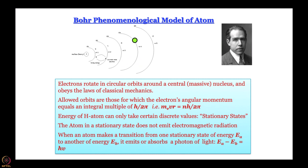These were given a name by Bohr - they were called stationary states - and it is important to understand this term because it is used even now in the most modern approach of quantum mechanics. When we say stationary states we do not mean that the electron is stationary. According to Bohr's model it is moving in circles. What we mean is that the energy does not change - stationary as far as energy is concerned, not as far as position is concerned.